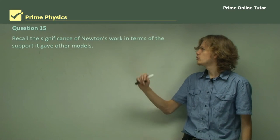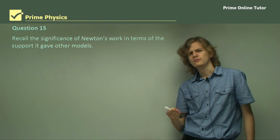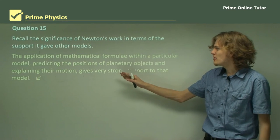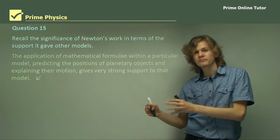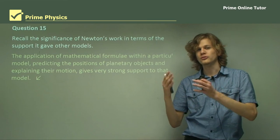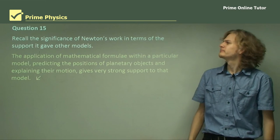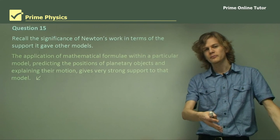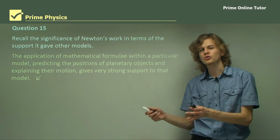Question 15: Recall the significance of Newton's work in terms of the support it gave other models. Newton came up with equations and mathematics. The application of mathematical formulae within a particular model, which is able to predict both the positions of planetary objects and explain their motion, gives very strong support to the model. With Newton's equations and mathematics, he was able to provide strong support for Kepler's model of the universe. That concludes the questions. We've learned about Kepler's three different laws and Newton's contributions to Kepler's laws with gravitational attraction in order to explain Kepler's laws and come up with an even better model of the universe.